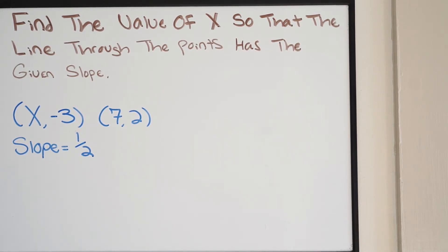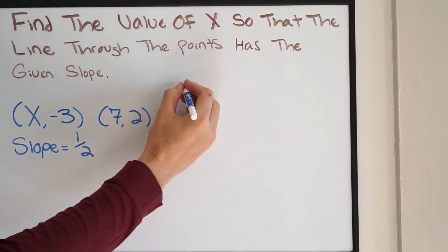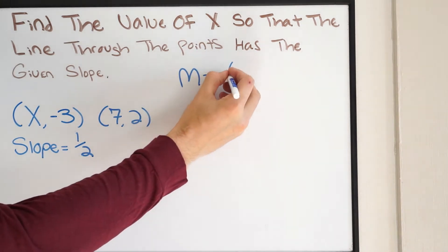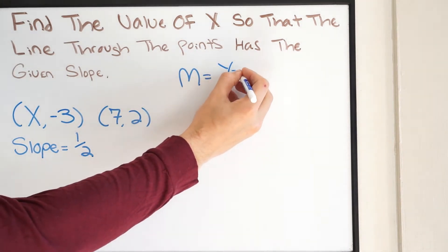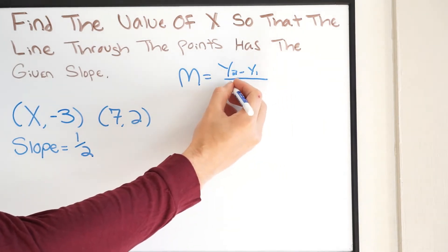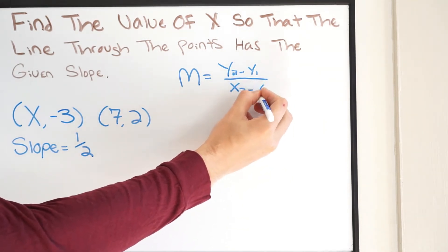Now this goes back to the equation of a slope between two points, and we have talked about this in the past. And that equation is going to be the following. We're going to have m, where m is our slope, and we'll have y2 minus y1 all over x2 minus x1.